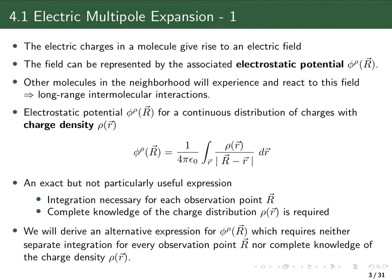The electric charges in a molecule — the positive charges from the nuclei and the negative charges from the electrons — give rise to an electric field. A way to represent that field is by the associated electrostatic potential, which is a field meaning it has different values at different points in space. Other molecules in the neighborhood will experience and react to this field, which is another way of saying that there are long-range interactions between molecules.